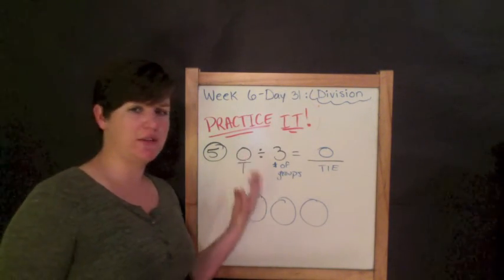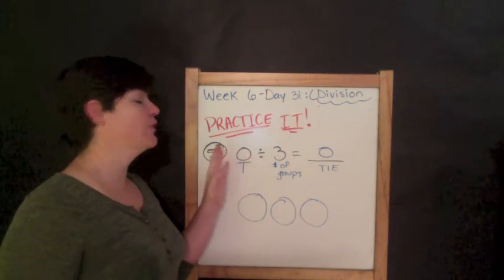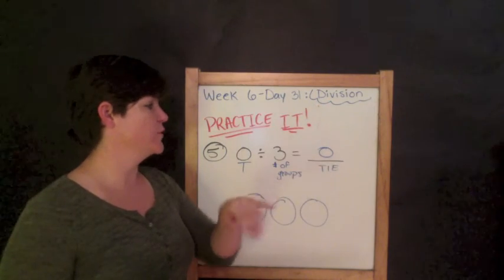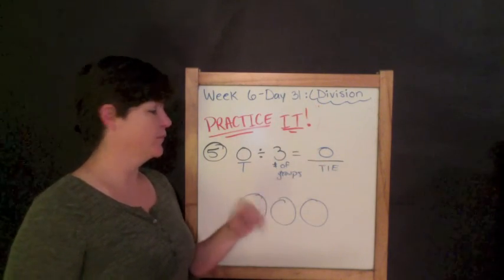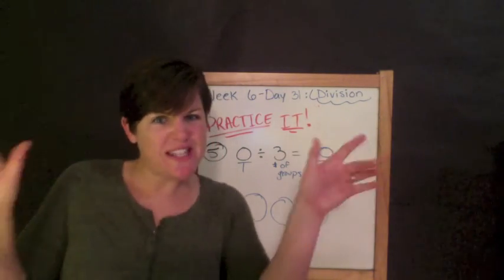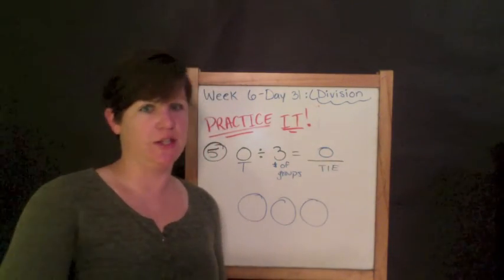Now you know what to do. So, whenever you have a zero, just like whenever you have a zero as a dividend, you know that your quotient is going to be zero. So, if you see that later in your workbook, you'll know what to do with it. Don't be scared of the zeros, guys. They're not scary.